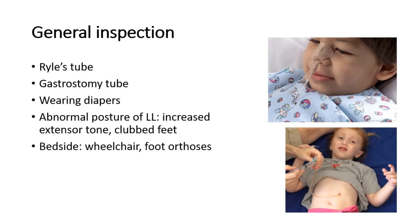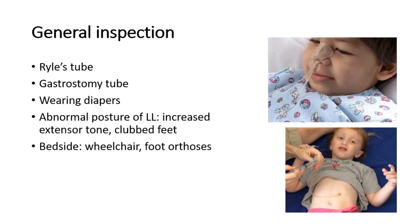Besides that, we also look for bedside apparatus, such as an NG tube, also known as nasogastric tube, shown in the upper picture, and a gastrostomy tube shown in the lower picture. We comment whether they are wearing diapers. Any abnormal posture of their lower limbs — expected findings include increased extensor tone or club foot. Also look at the bedside for any wheelchair or foot orthosis to suggest their need for walking aids.